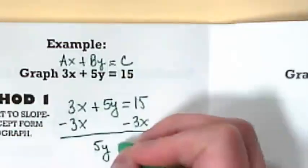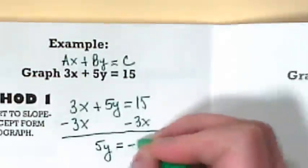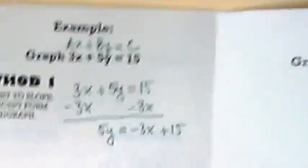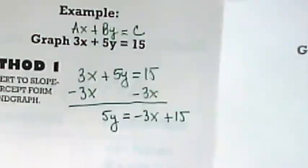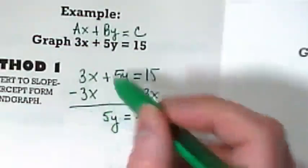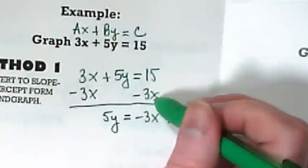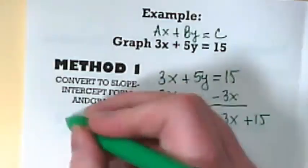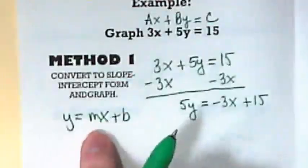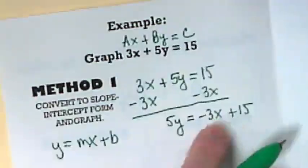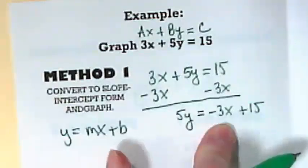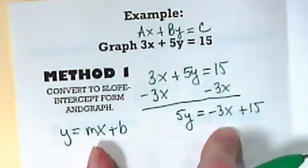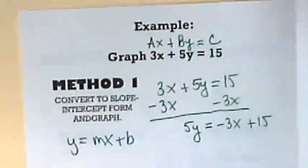That leaves us with 5y is equal to negative 3x plus 15. I've zeroed out 3x, but in doing that, I've got a negative 3x on the right side. I'm trying to turn this into slope intercept form, which is y equals mx plus b. Where is the mx in this equation? It's right after the equal sign. And when I turn this over here, my x is right there, so I want to put it in the same place as this mx. See what I'm doing there? It's like I'm sliding the pieces into the right places.